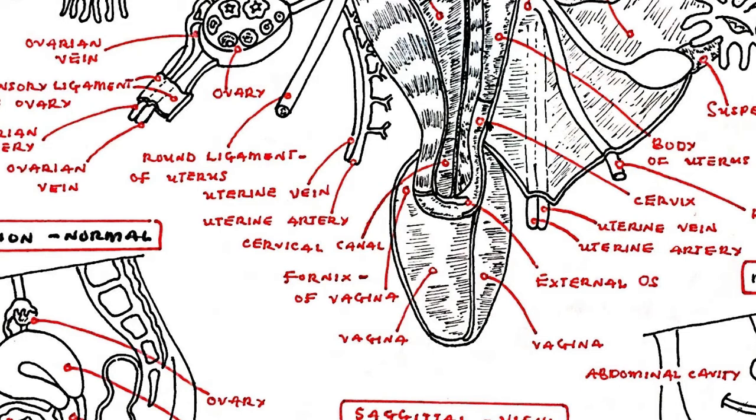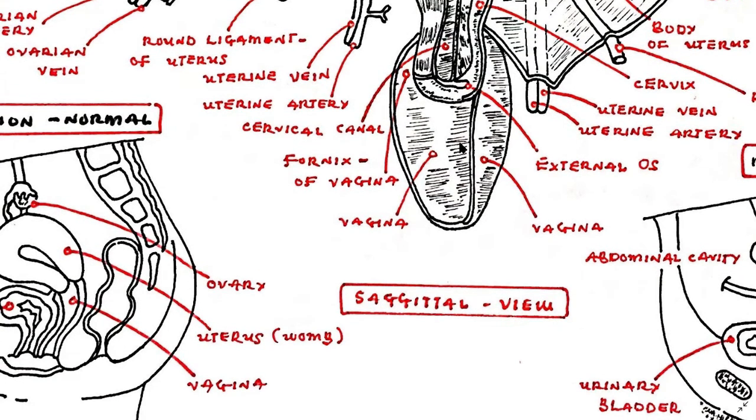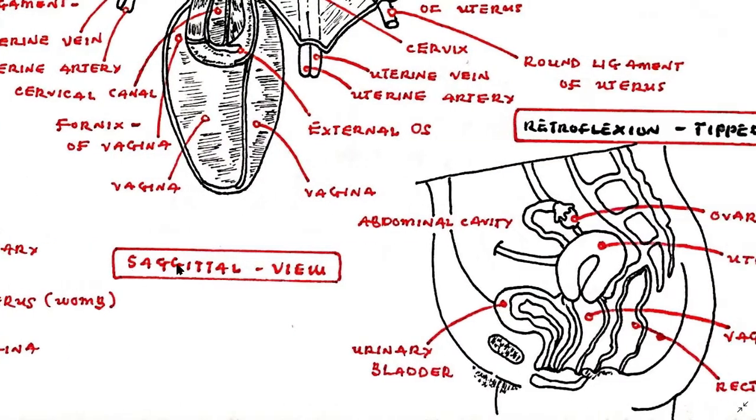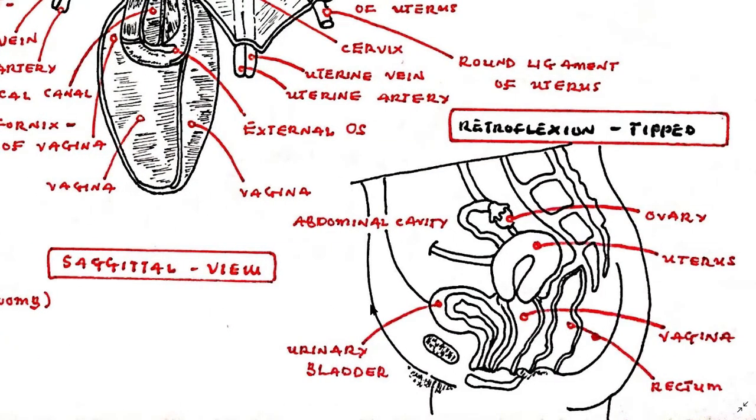The uterus is usually anteverted and anteflexed, meaning that it is tilted and bent forward relative to the vagina. Its neck or the cervix fits into the upper part of the vagina at about a right angle, and the uterine body or the fundus is bent and tilted anteriorly over the bladder.